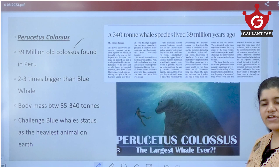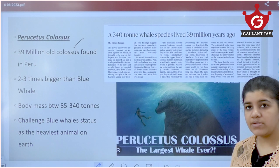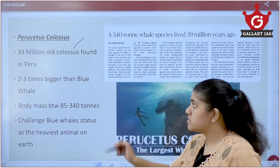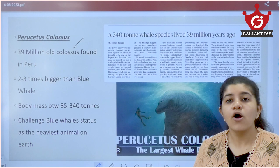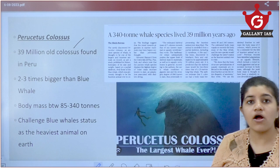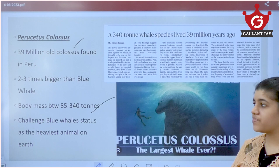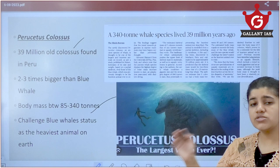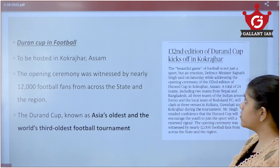In science and technology news: a fossil called Perucetus Colossus found in Peru is about 39 million years old. We used to think the blue whale is the heaviest and largest marine animal, but this ancient creature is estimated to be two times bigger than the blue whale, with a body mass of 85 to 340 tons, challenging the blue whale's title as the heaviest animal on Earth.